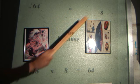The square root of 64 equals 8, because 8 times 8 equals 64.